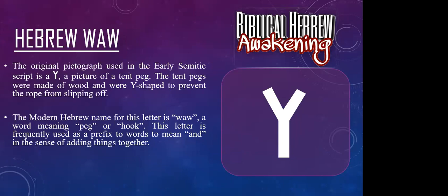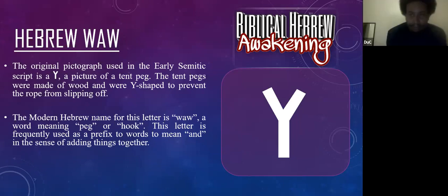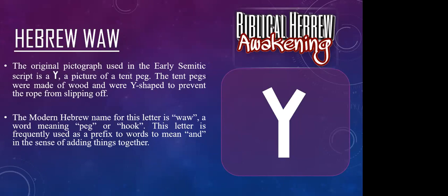Hebrew is based on function. This character — peg, hook — is frequently used as a prefix to words to mean 'and.' It's a conjunction. Think of a wooden tent peg conjoining two words together, two sentences together, two thoughts together. Question: would this also be the root of the letter X? No, X is a different character. You're looking at Y, V, U, and W all rooting back to this one character.